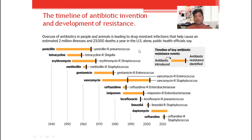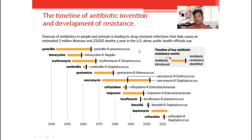Levofloxacin, a fluoroquinolone — a gyrase inhibitor group drug — was introduced in 1995, and resistance was noticed almost within a year in Pneumococcus bacteria. Linezolid was introduced in 2000, and just after two years, resistance was observed in Staphylococcus. Daptomycin was introduced in 2003, and after about seven years, resistance was observed. Ceftaroline was introduced in 2009, and resistance was observed around 2011 in Staphylococcus. This is the brief description of the discovery and development of resistance in different bacteria.